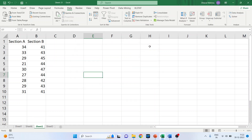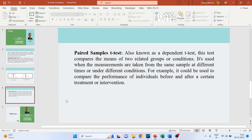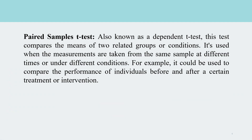Now let's take the other case — the dependent sample T-test. The dependent sample T-test is also known as the paired sample T-test. This test compares the means of two related groups or conditions. It is used when measurements are taken from the same sample at different times or under different conditions. For example, it could be used to compare the performance of individuals before and after a certain treatment or intervention.